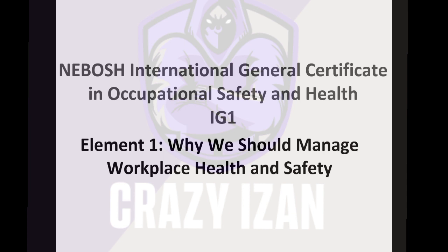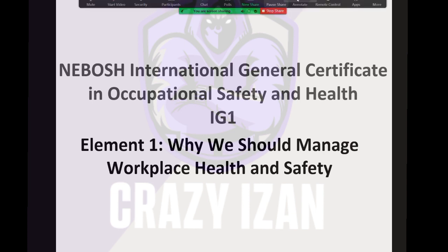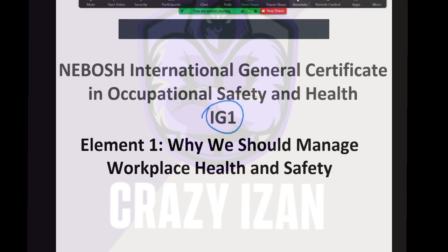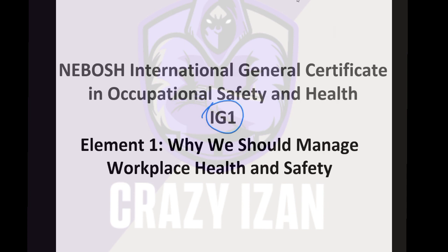NEBOSH IGC has two parts. The first part, which we are going to start today, is known as Unit IG1, and the second part is known as Unit IG2. IG1 will be assessed based on an open book examination followed by a closing interview. The open book examination for Unit IG1 is scheduled for 5th of October, and at least one week to ten days after, you will schedule your interviews as well.